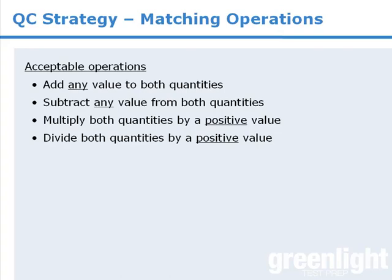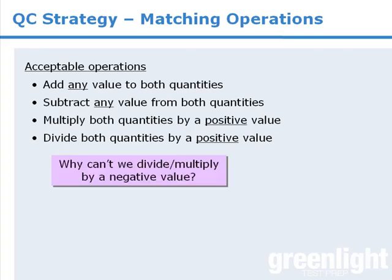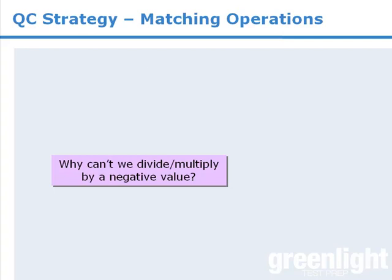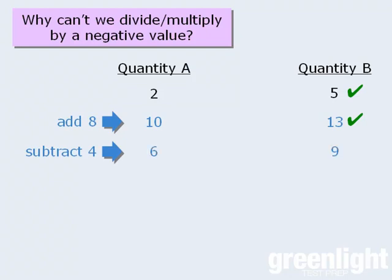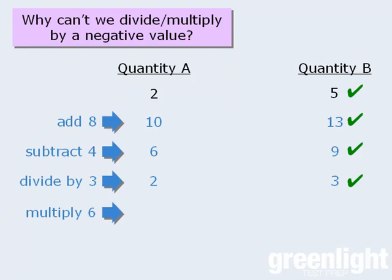Now when it comes to acceptable operations, you may be wondering why we can't divide or multiply both quantities by a negative value. To answer this question, let's examine a very rudimentary question. Of course it's obvious here that quantity B is greater than quantity A. However, notice what happens when we perform any of the acceptable operations on each quantity. For example, if we add 8 to both quantities, quantity B is still greater than quantity A. If we subtract 4 from both quantities, the new values are such that quantity B is still greater. If we divide both quantities by positive 3, it's still the case that quantity B is greater than quantity A. If we multiply both quantities by a positive 6, the resulting values are such that quantity B is still greater.